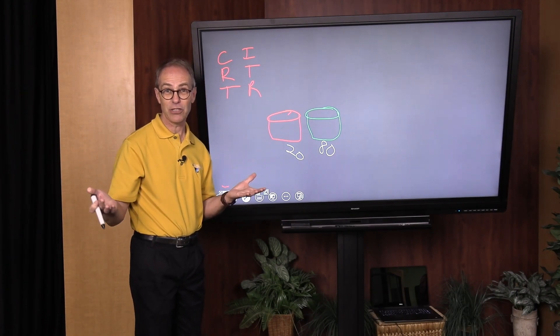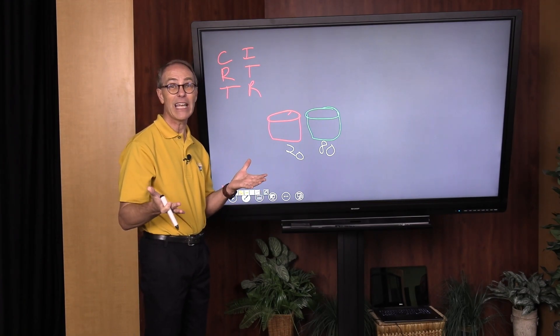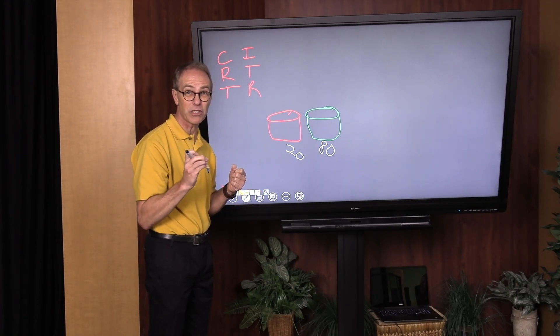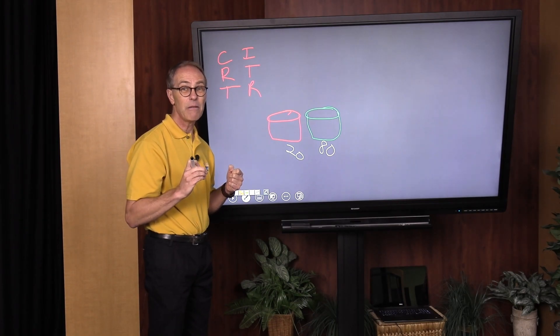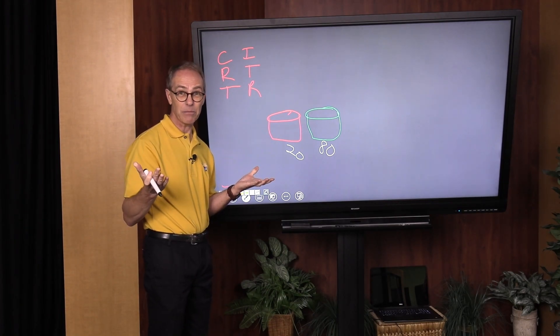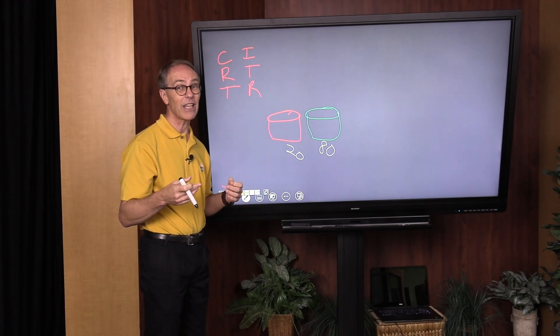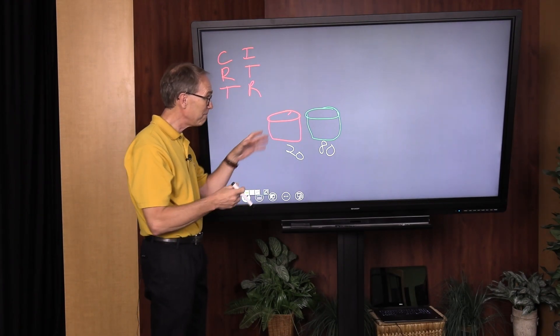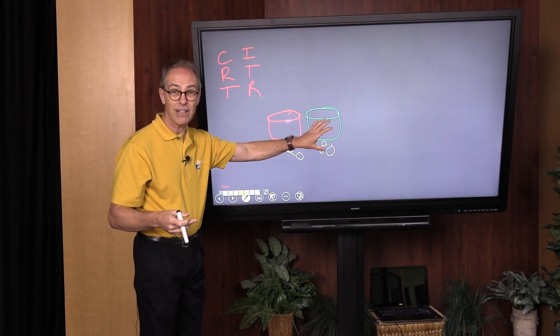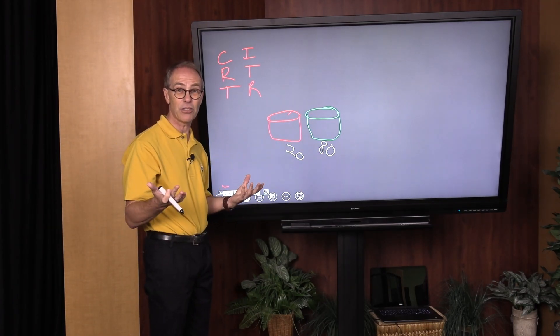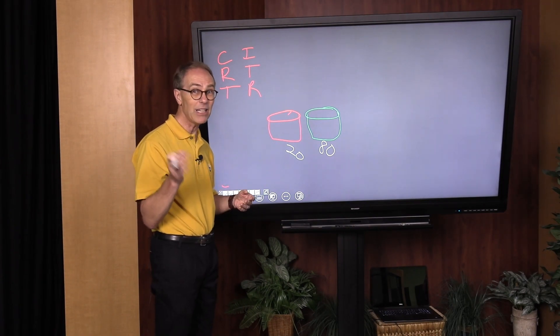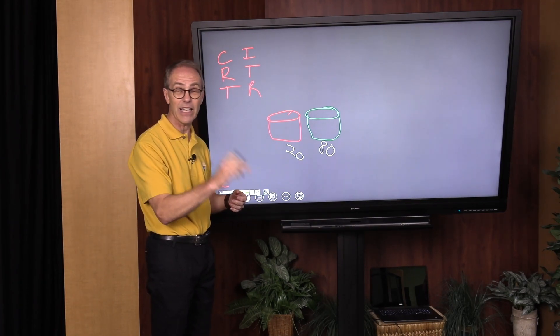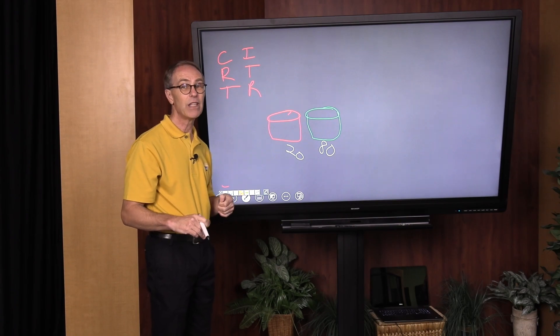The rats wanted cheese, so if they guessed correctly which button was going to turn on and they hit it beforehand, they were going to get some cheese. Guess what they figured out? Just by watching, the rats found that most of the time the green button actually turned on, so they found that they would get the cheese if they just kept hitting the green button and never hit anything else.